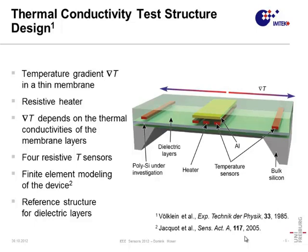Since the device is only capable of measuring the average thermal conductivity of the membrane layer stack, we need a reference structure to determine the thermal conductivity of the remaining layers independently. The test structure itself comprises the polysilicon layer under investigation, whereas the reference structure does not comprise this layer and thus is capable of measuring the remaining layers independently. In the final evaluation, the result can then be compensated for the remaining layers.